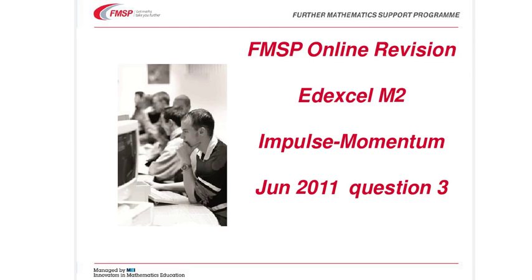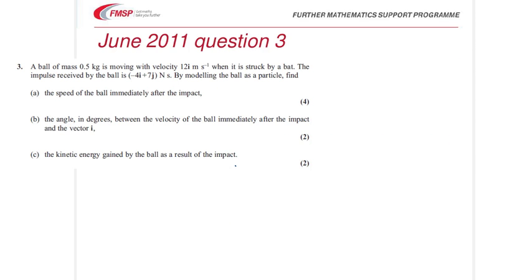Here's the question, phrased in vector terms using i and j vectors, but we write them as column vectors. Let's make a few notes here: the mass is 0.5, the initial velocity that we're given is 12, 0.